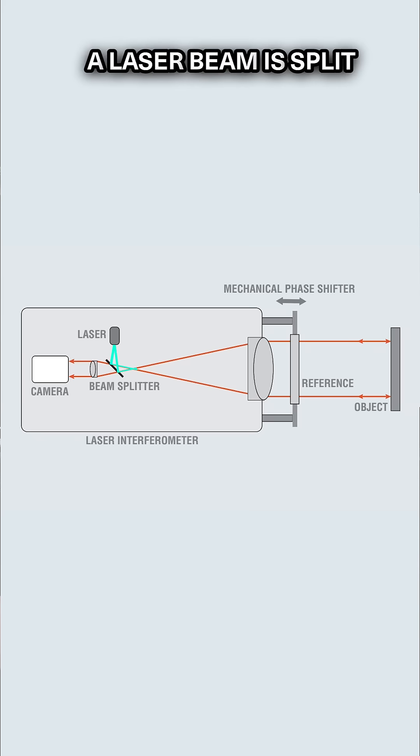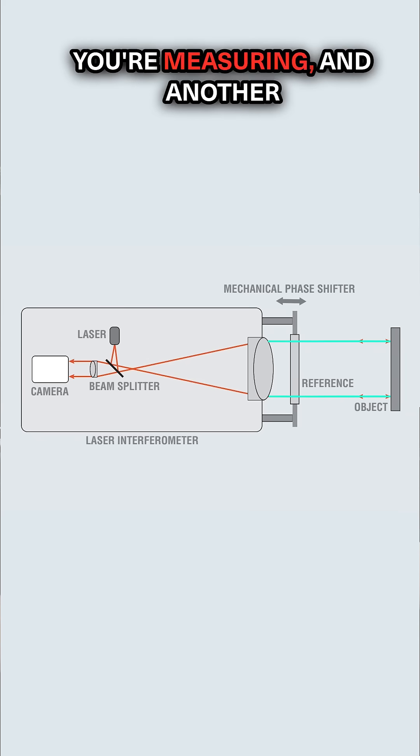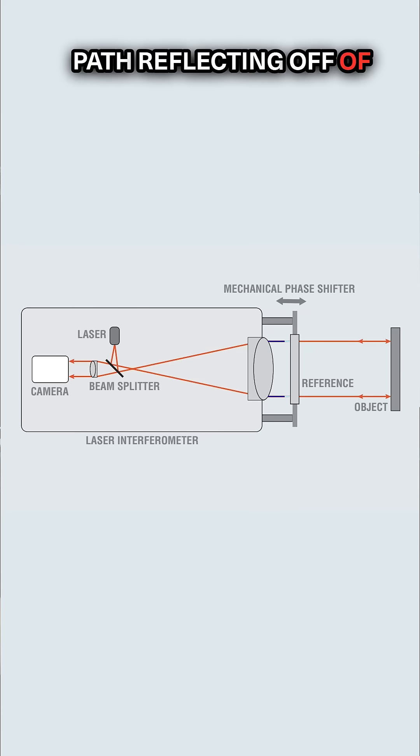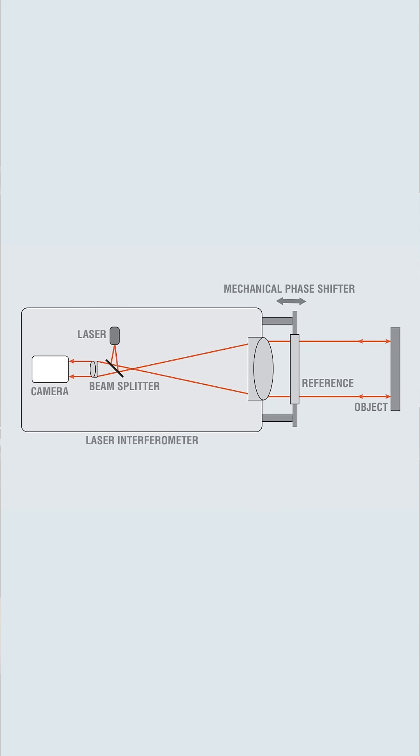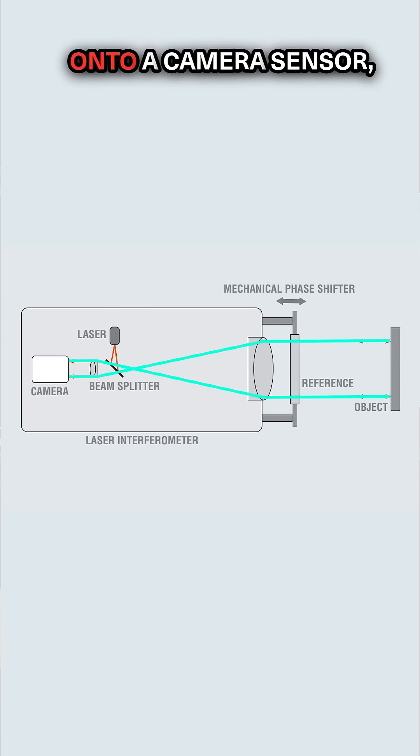To measure a flat surface, a laser beam is split into two paths, with one path hitting the part you're measuring and another path reflecting off of a known reference surface. Both beams are then combined onto a camera sensor where they interfere with each other.